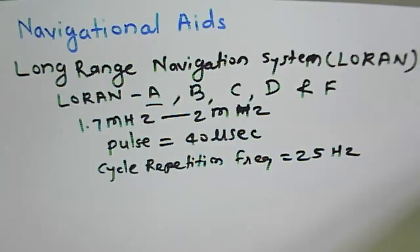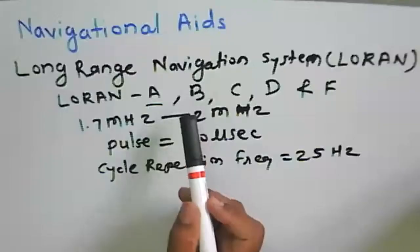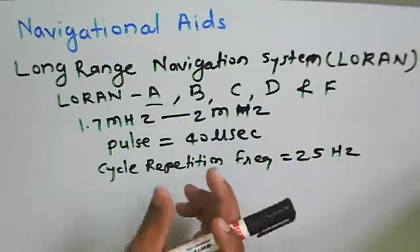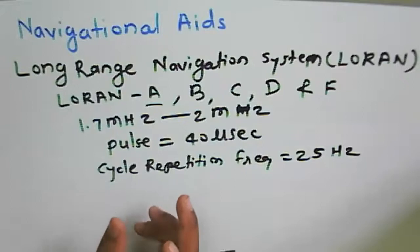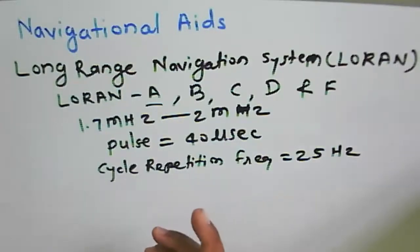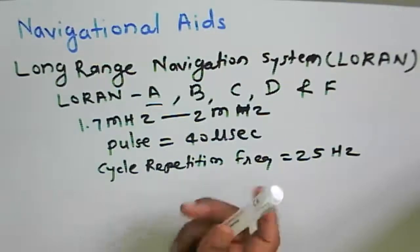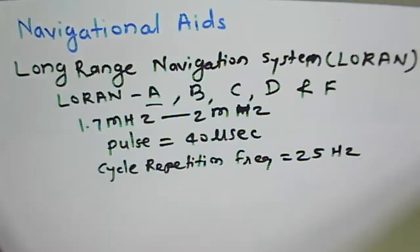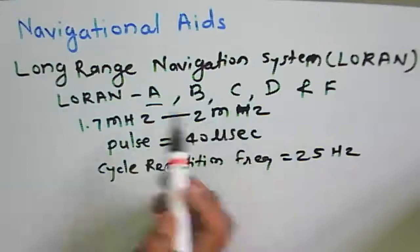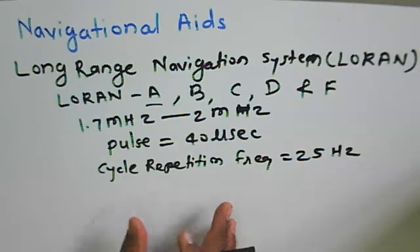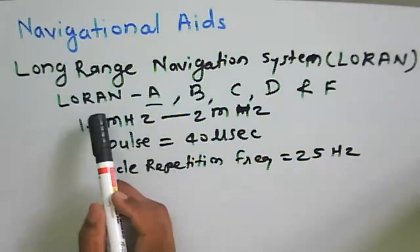LORAN is useful for both marine and aviation applications. LORAN A is reliable for obtaining a distance of 700 miles during the day and 1,400 miles at night. The operation is based on pulse transmission, and the pulse repetition sequence for A, B, C, D, and F variants is different. Nowadays, people mostly use the LORAN C system.